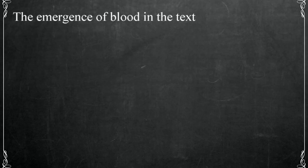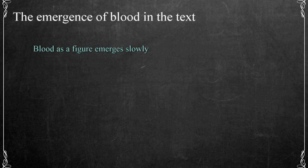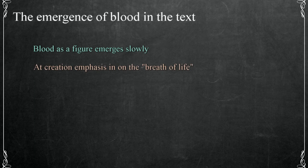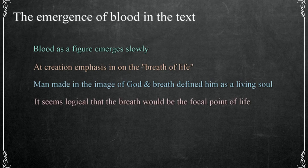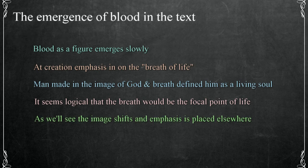The figure of blood and its importance emerges slowly in the narrative. In the account of creation, when man is formed, we see the focus placed on the breath of life that made man a living soul in Genesis 2:7. This is paired with the statement that man was made in the image of God. From that point on we might think the emphasis related to the sacredness of life would be placed on the breath, but the image shifts and we find the emphasis placed elsewhere.